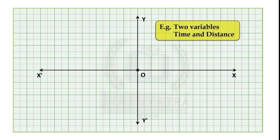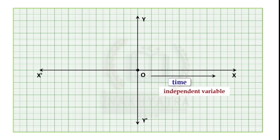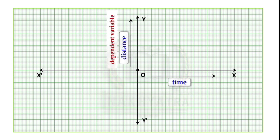For example, consider two variables: time and distance. We will take time on the x-axis, which is an independent variable, because it is not affected by any other variable. We will take distance on the y-axis, which is a dependent variable.